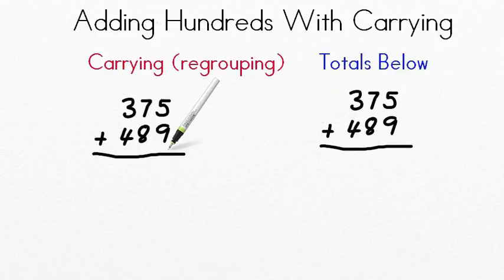So with adding your hundreds, the first thing you have to do is add the ones place. Can you point on your screen to the ones place? That's right, this right here, these guys are the ones. So what's 9 plus 5? That's right, 9 plus 5 equals 14.